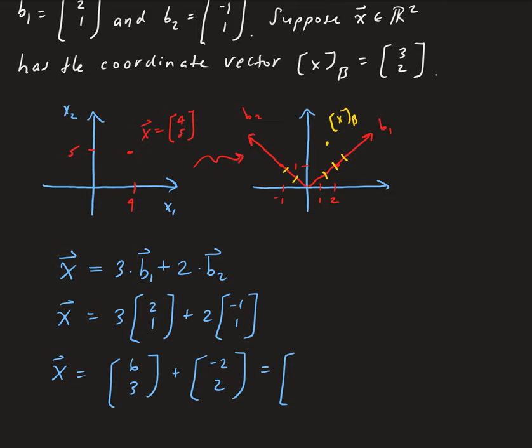So this gives us [4, 5]. And that's the vector that we started out with in the last, in the previous video.